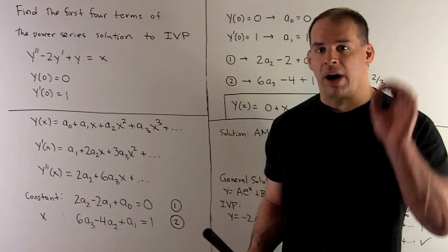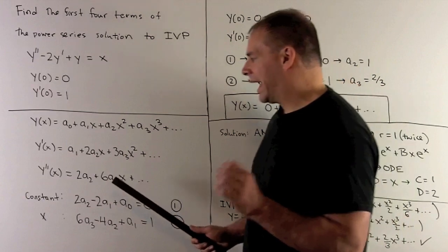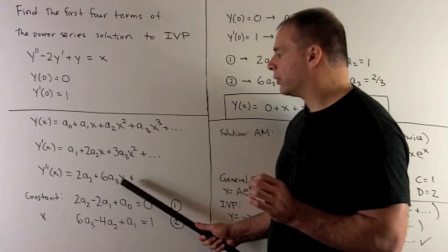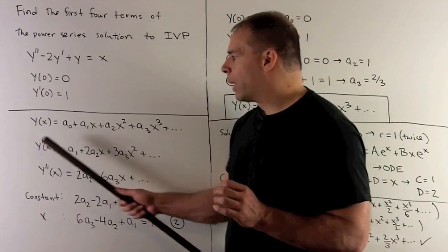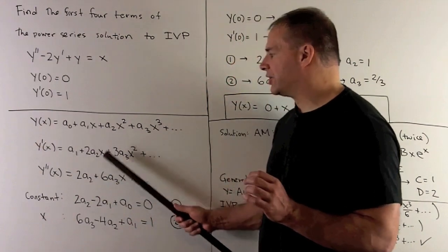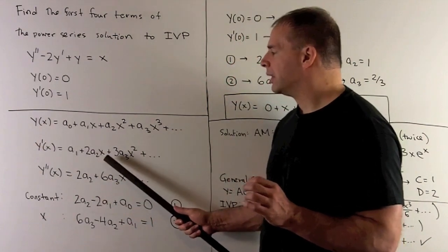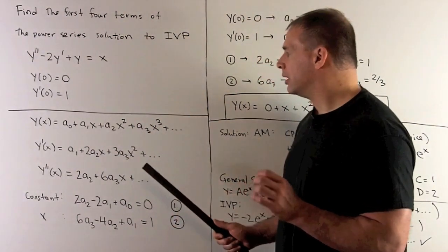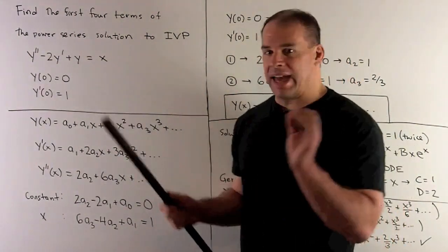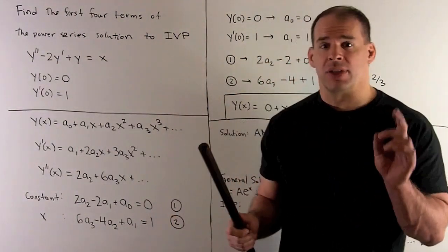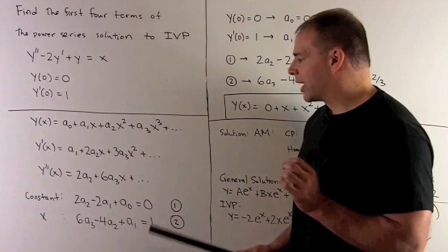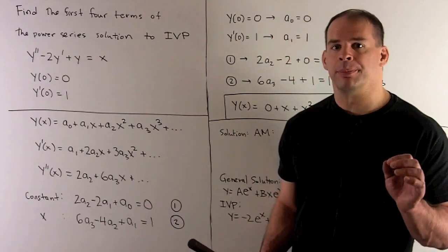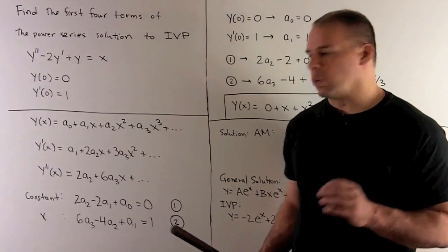Lining up the x terms: from y double prime we get six a three, minus two y prime gives minus four a two, and y contributes a one. On the right side, x contributes one. So equation two is: six a three minus four a two plus a one equals one.